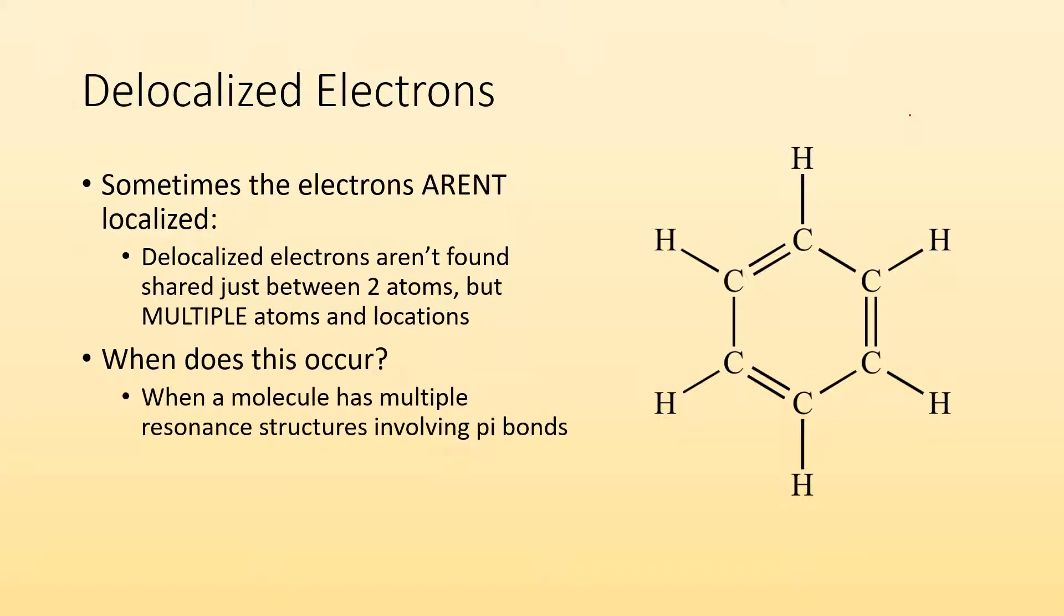When we have a molecule that has multiple resonance structures involving pi bonds, we can have delocalized electrons. So if we take a look at this example, benzene.